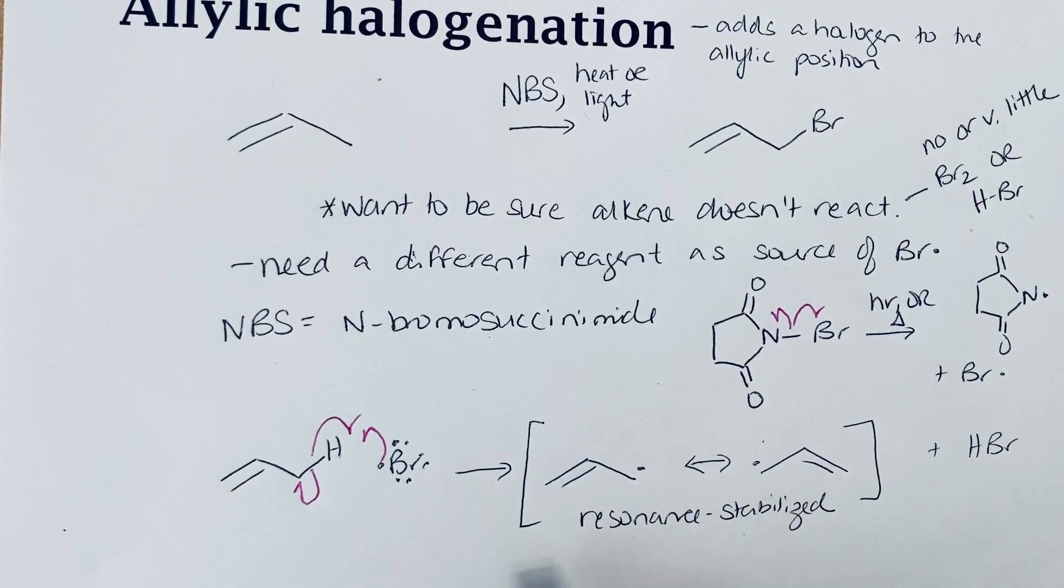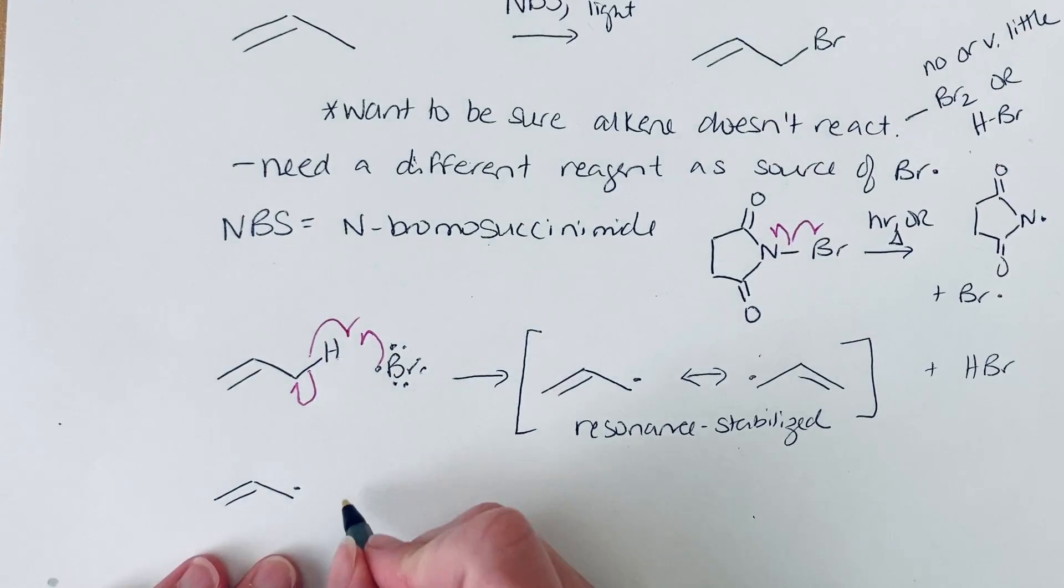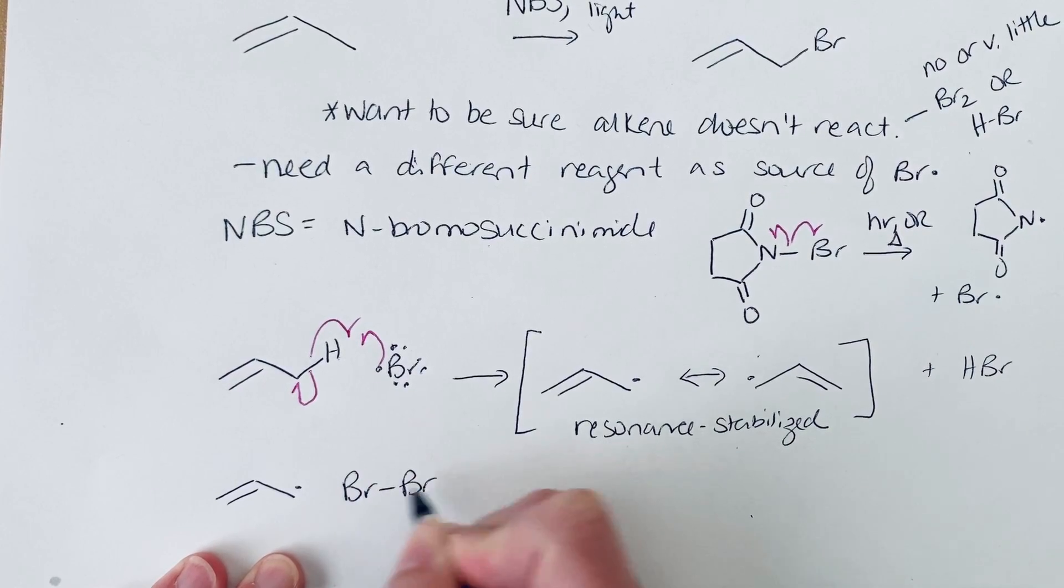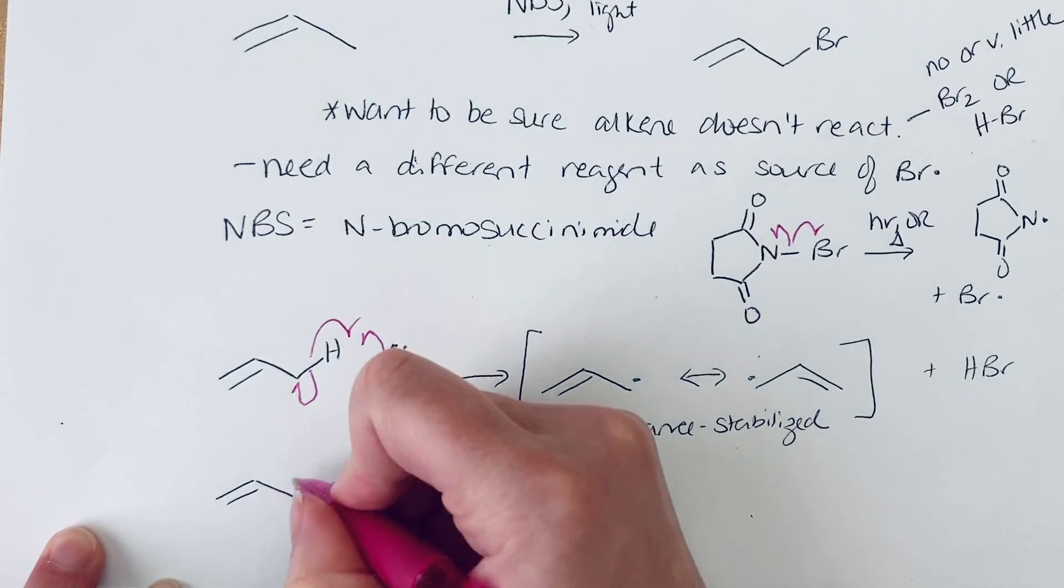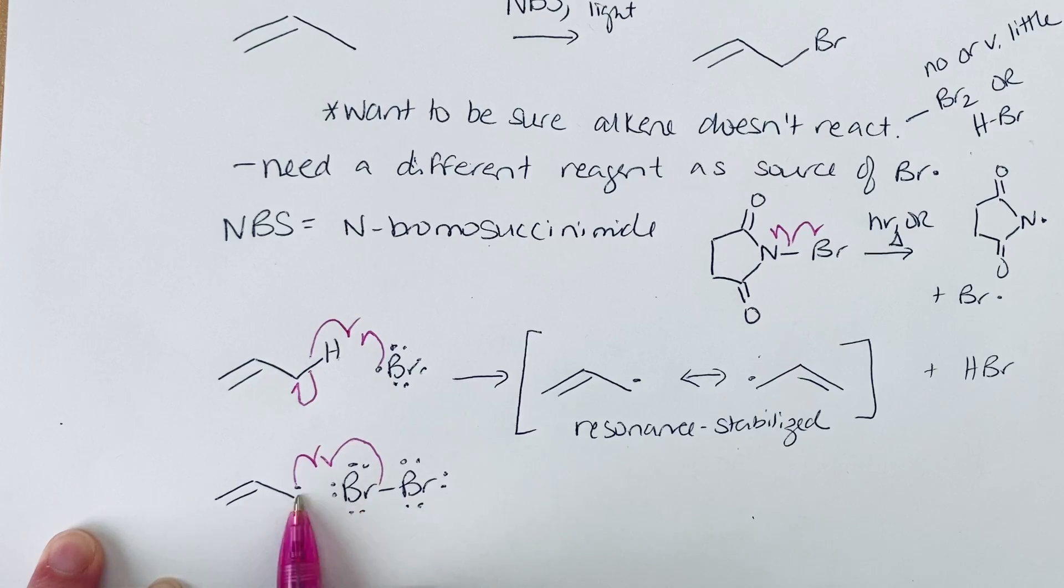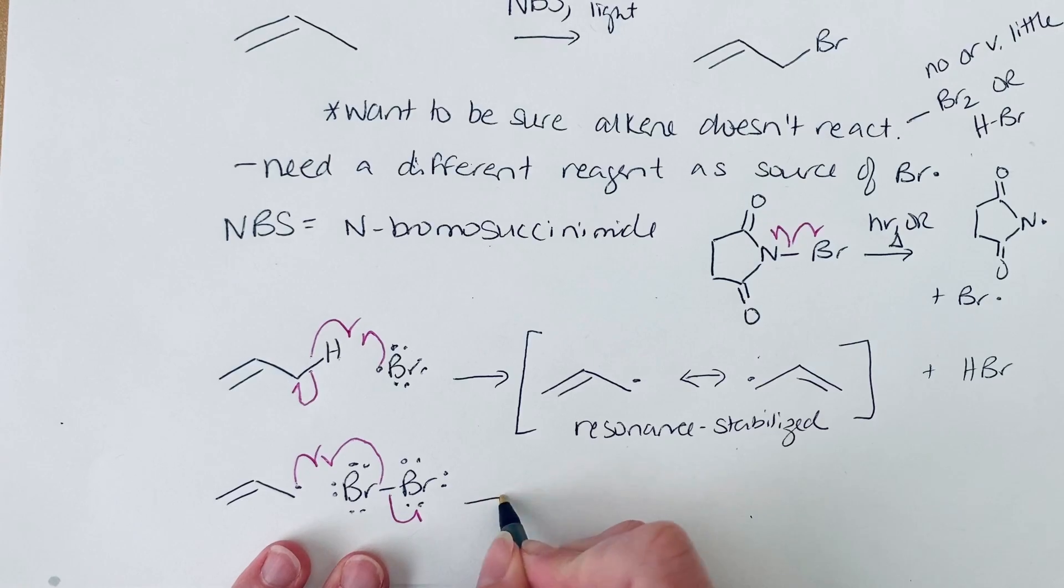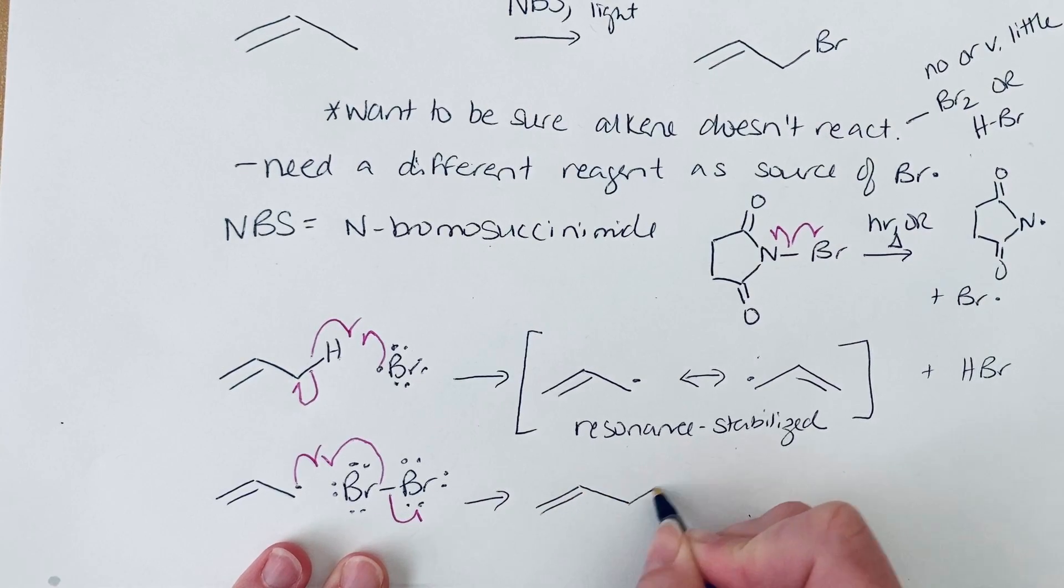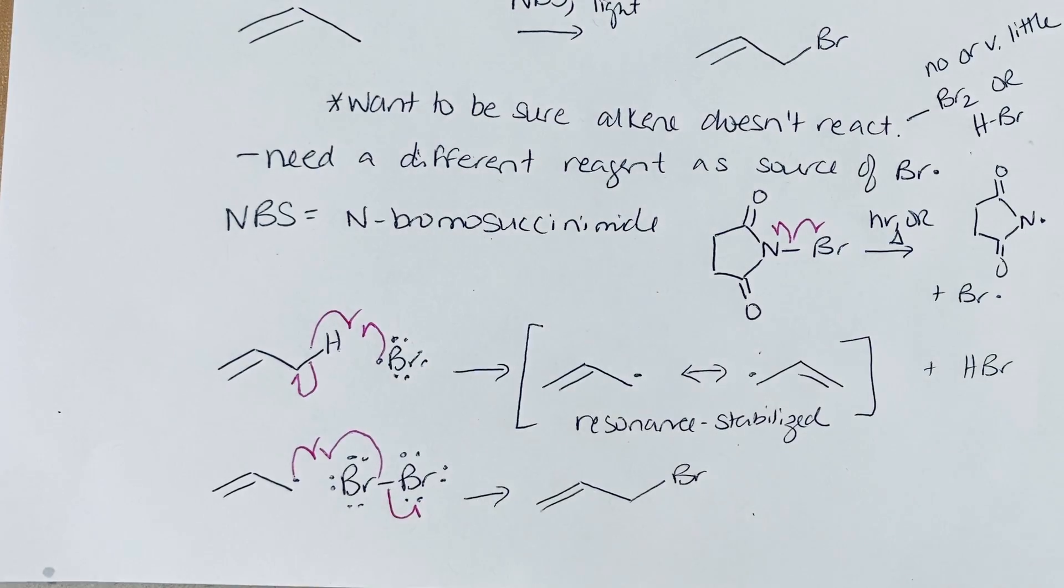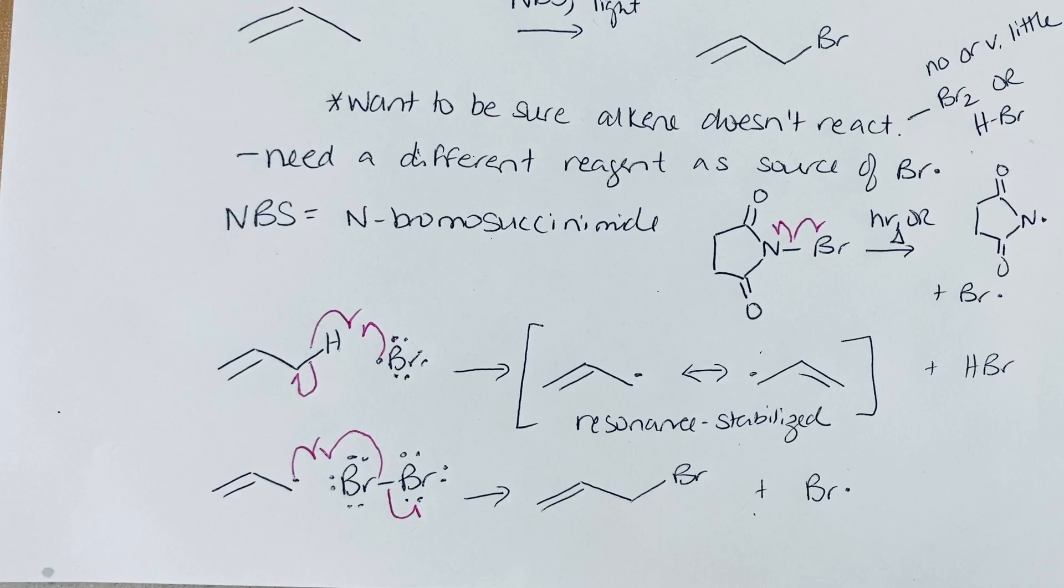Once we have this resonance stabilized allylic radical, if this is to react with some molecular bromine, then these will combine. We can combine this bromine with this radical and we will generate a little bit of bromine radical again here. We formed the allylic bromide and we formed more bromine radical that can continue through this cycle.